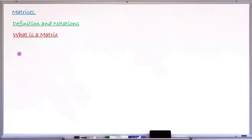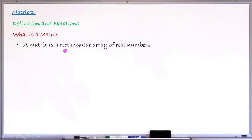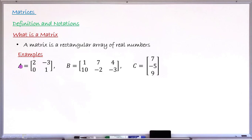To begin the lesson, let me first explain what a matrix is. A matrix is a rectangular arrangement of real numbers. A typical example: matrix A equals, inside a square bracket, the numbers 2 and minus 3 in the first row, and 0 and 1 in the second row.